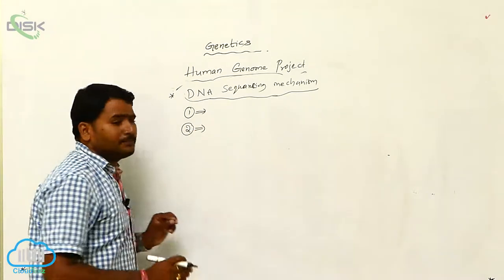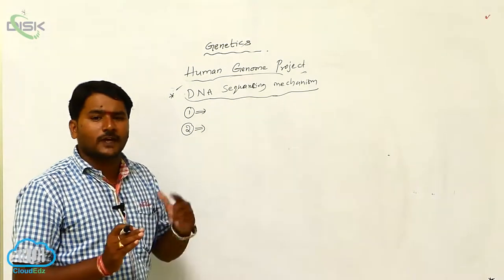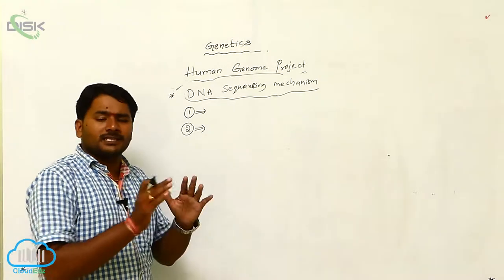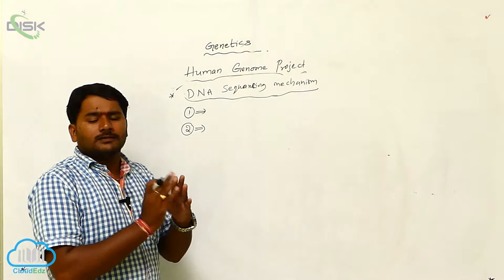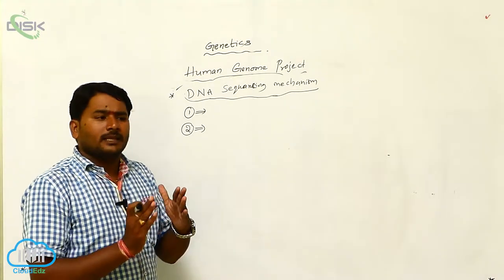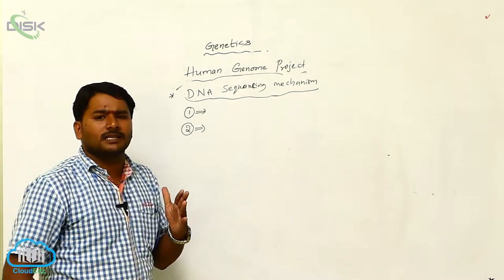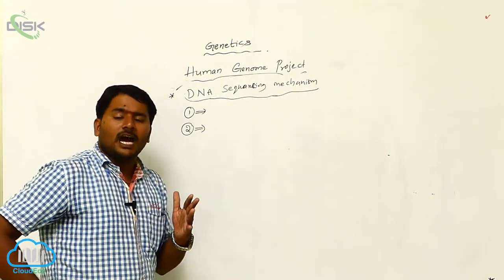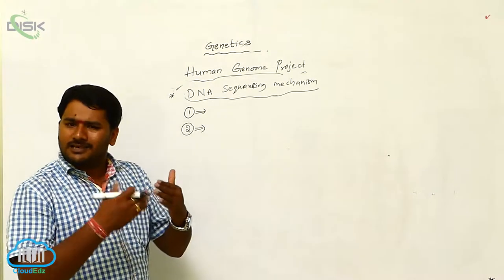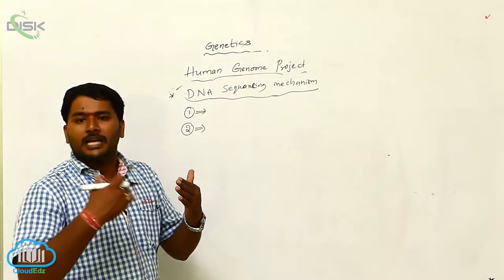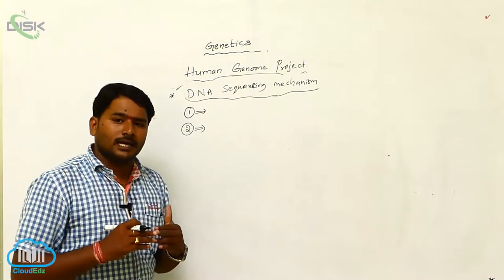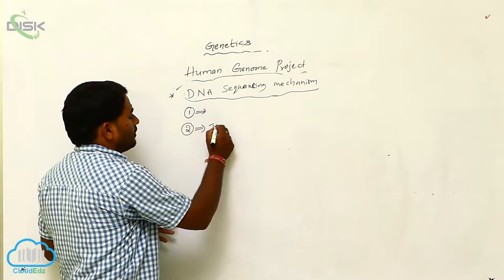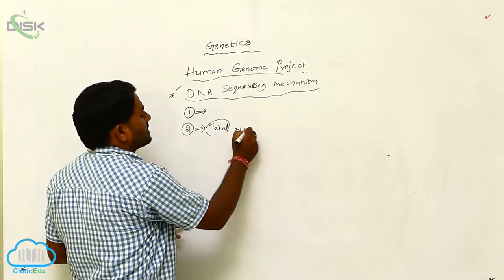But in the second type, there is no discrimination of expressed or non-expressed, or coding or non-coding. They are continuously sequencing the nucleotides — nitrogen bases — whether they are belonging to the coding or non-coding, no problem. Total nucleotides are sequenced.